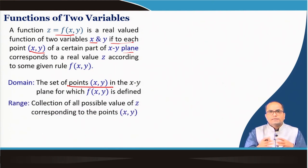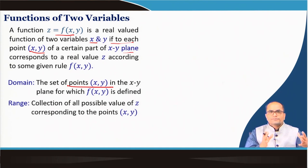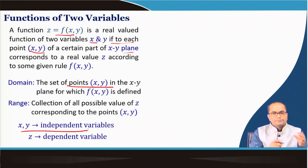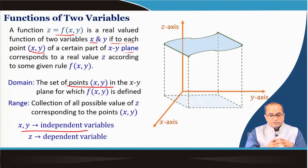All points in the domain must have the function defined. The range, as usual, is the collection of all possible values of z corresponding to points of the domain. Here x and y are called independent variables and z is called the dependent variable.